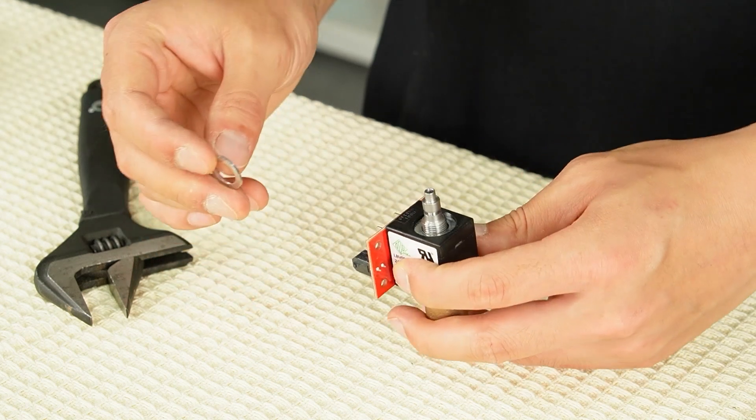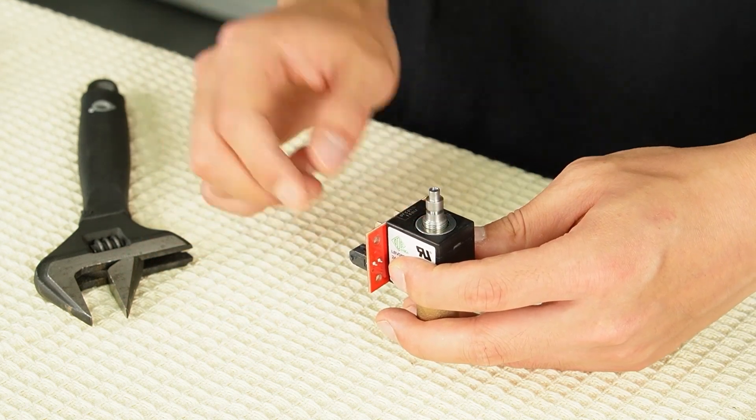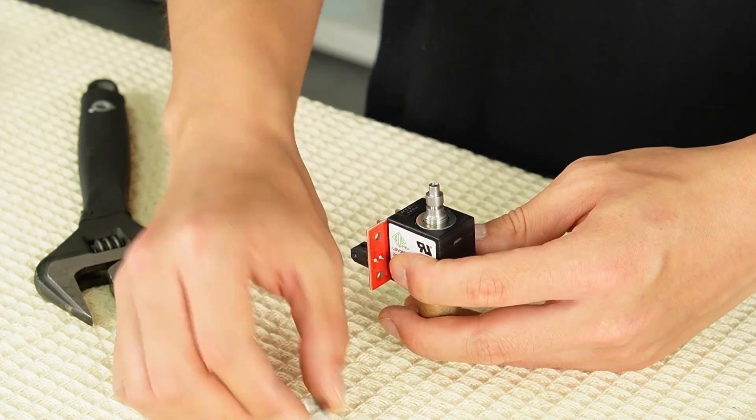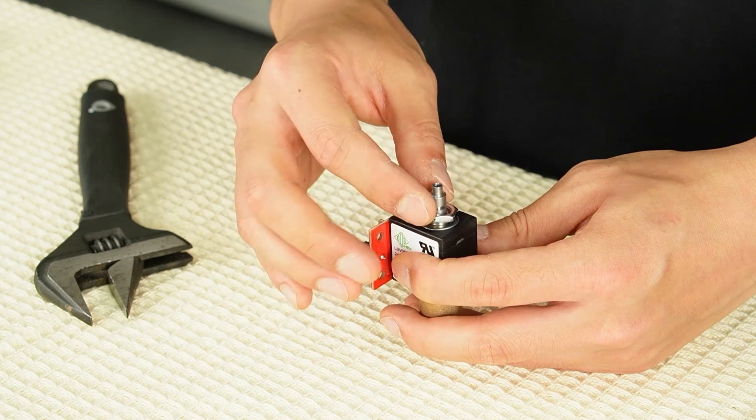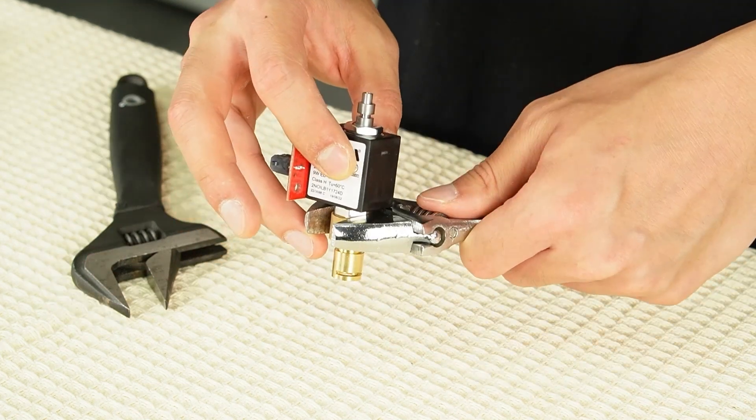Place the thicker washer at the bottom of the coil housing and secure it with the nut, tightening it firmly with the wrenches.